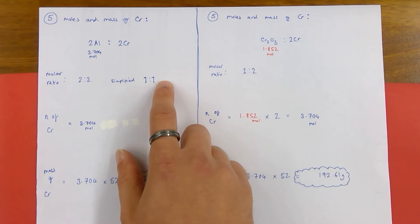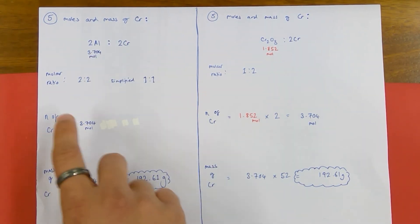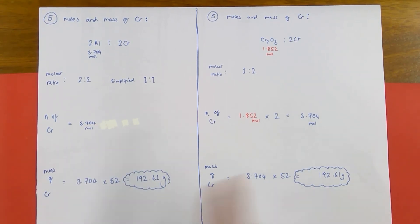Therefore, simplifying that, it's a 1:1 ratio of moles for aluminium reacting to form chromium. Therefore, the moles of chromium product I can form is also 3.704 moles. I can work out the mass of 3.704 moles of chromium by timesing by its relative atomic mass, which is 52 from the periodic table, telling me that I should form, theoretically, 192.61 grams of chromium in this reaction.